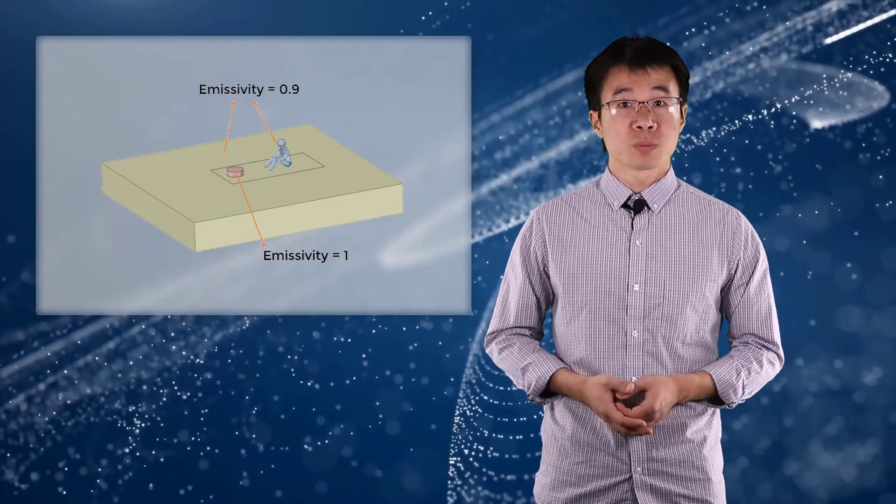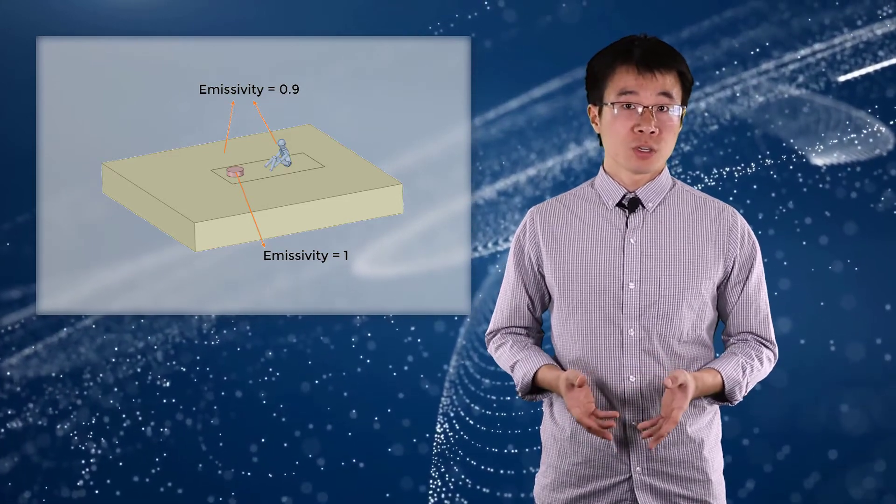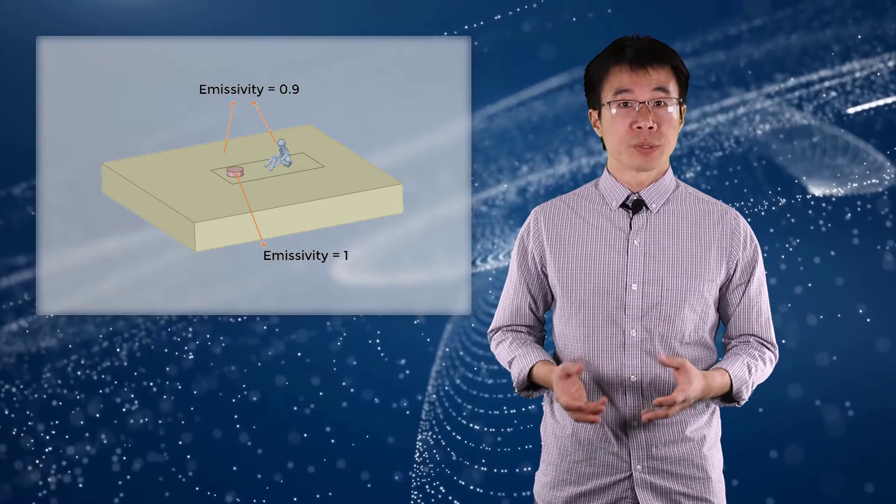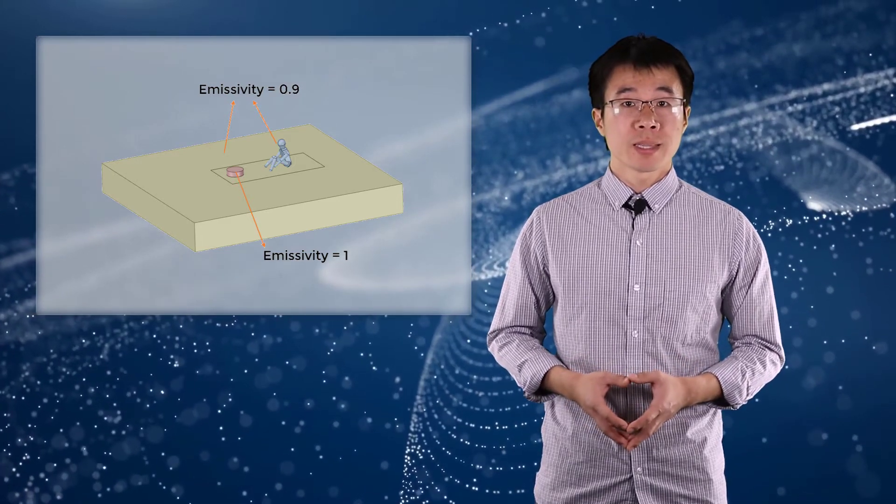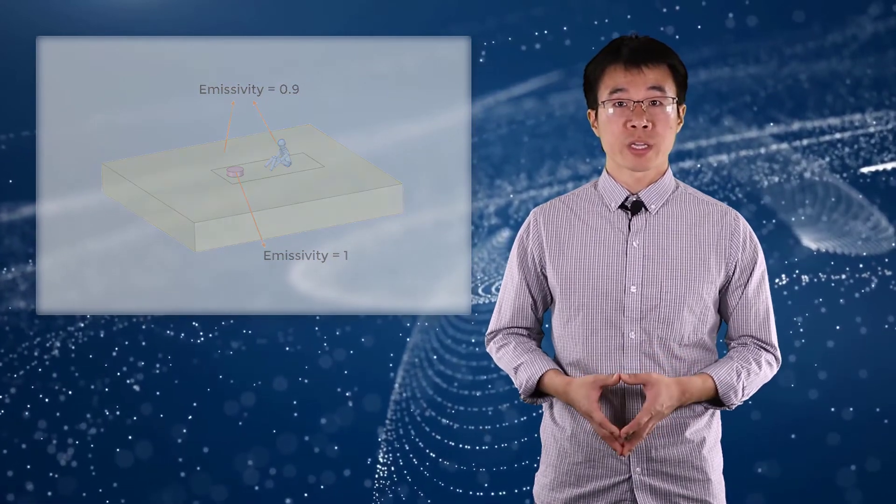For radiation, the emissivity is assumed to be 0.9 for the person and the ground, and 1 for the burning wood. The surface of the person, wood, and the top surface of the ground are included for radiation calculation. Again, we'll exclude the bottom surface of the wood and the ground area the wood covers from radiation calculations.